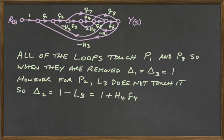So we have to write that delta two is one minus L3 or when it's expanded, one plus H4, G4. And the sign changes because the H4, G4 is negative anyway. So that's why we have to change the sign.